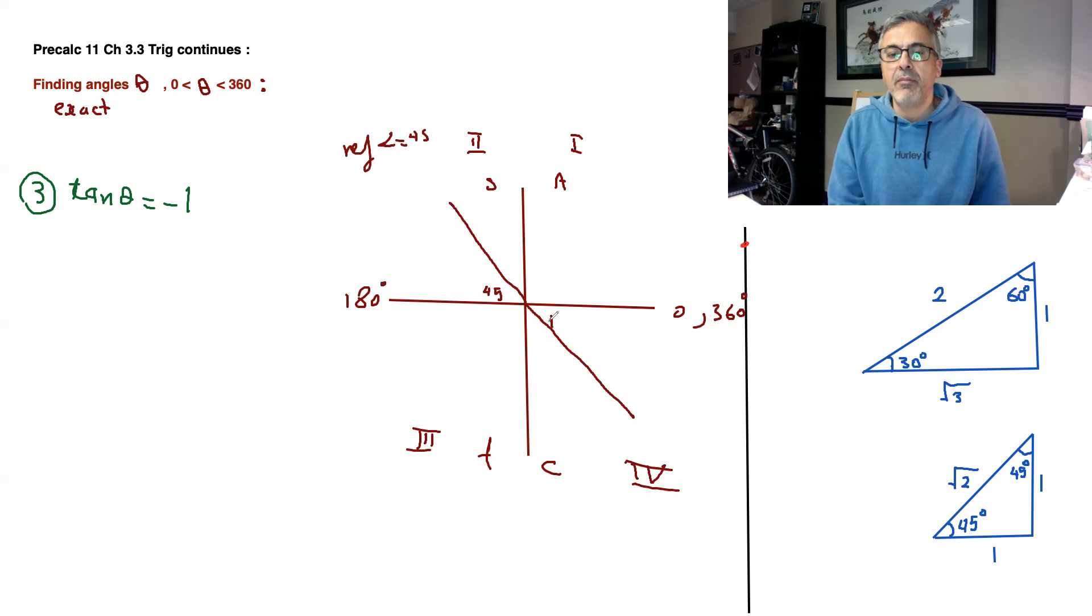Reference angle goes between the terminal arm and the x-axis, the x-axis and the terminal arm right there. So these are 45 degrees, 45 degrees. Don't think this is the answer, no, because we always measure the angles from the 0 side. So this is the 0 side.